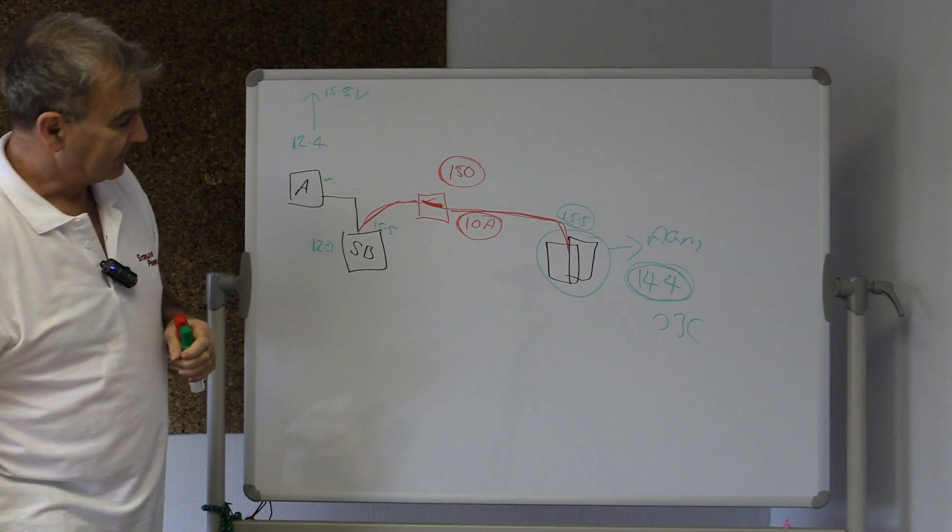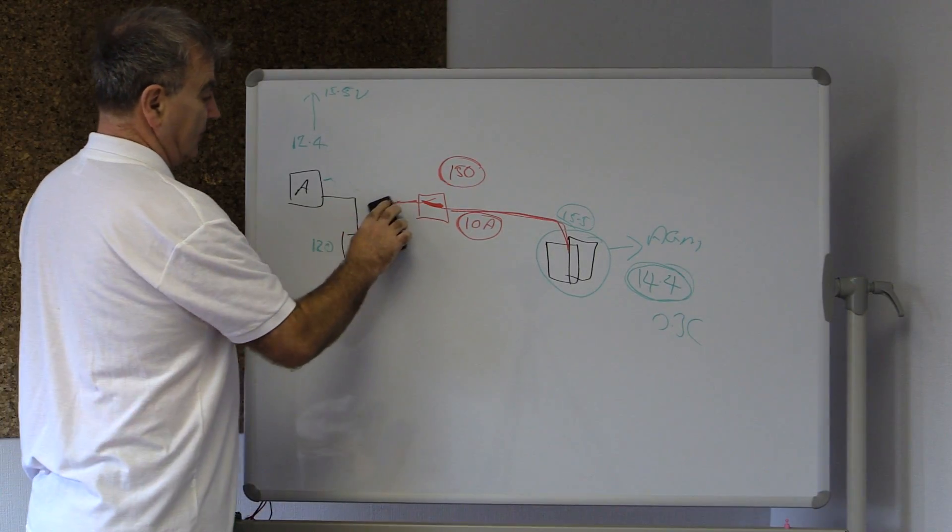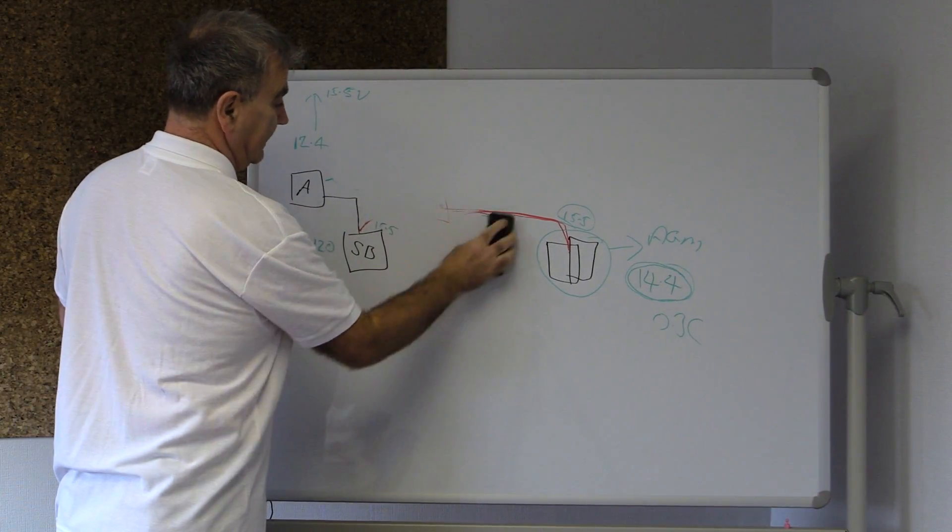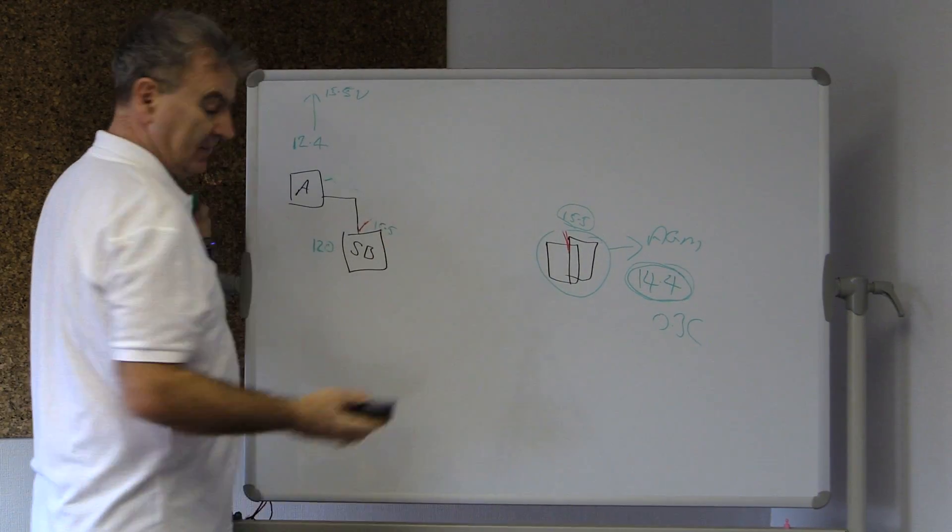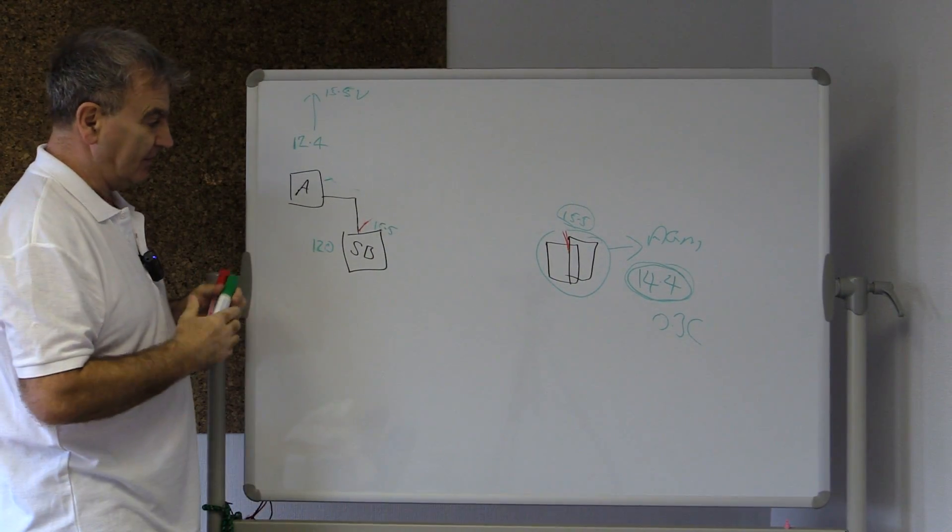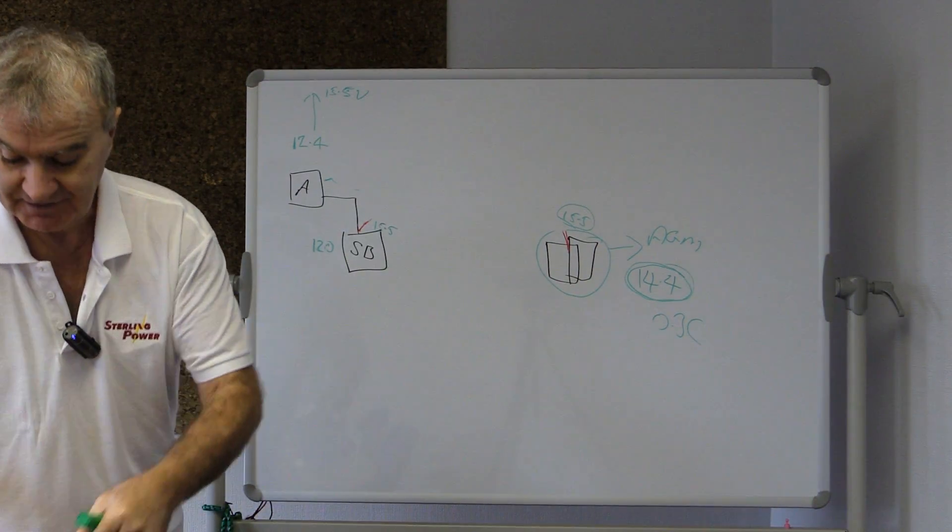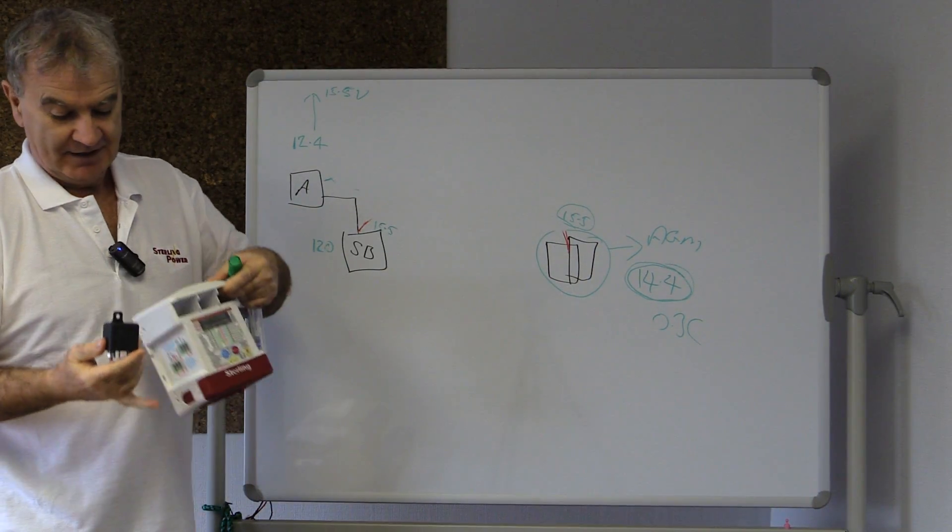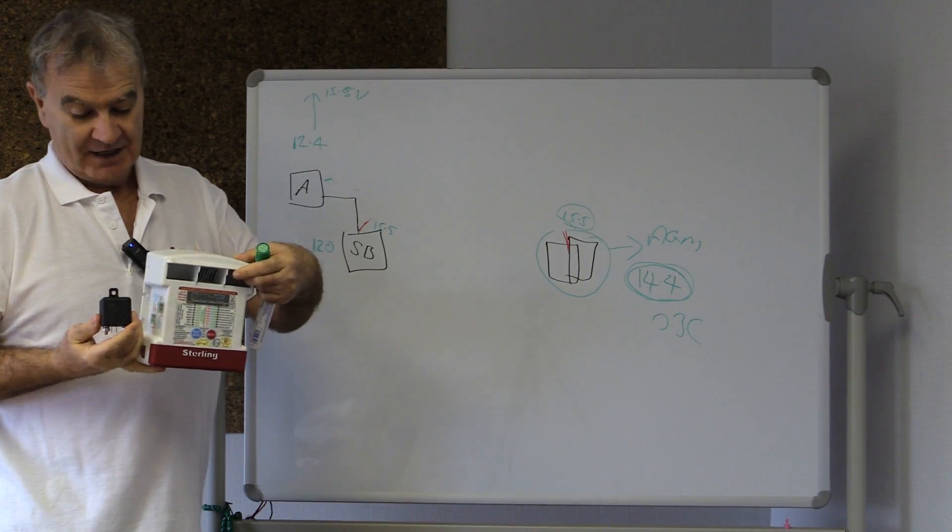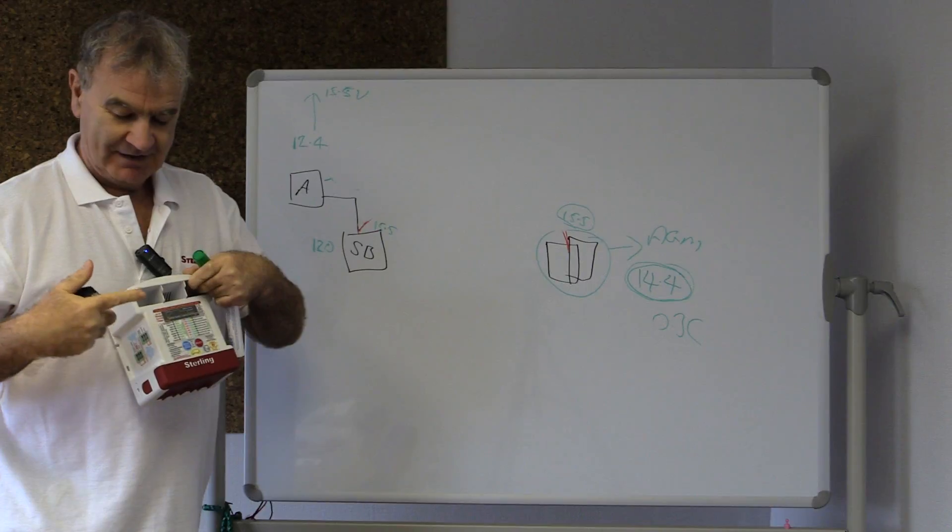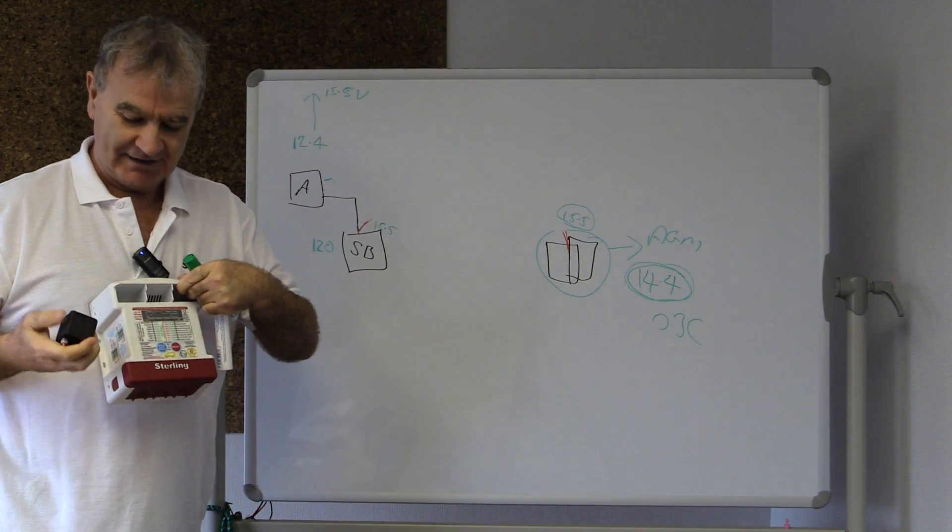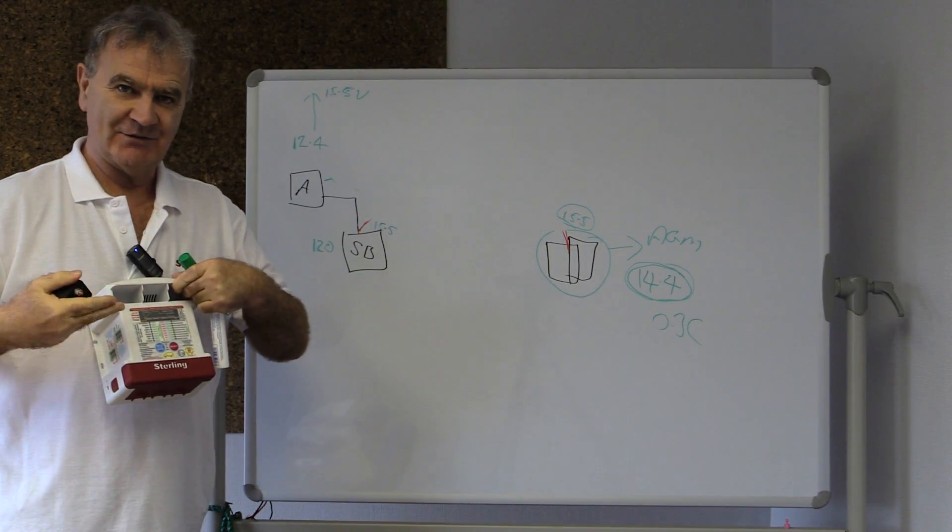So if we were to replace all that with, instead of a relay, which is what some people are doing - most of the builders now are using a thing called the battery-to-battery charger. This is your split charge relay, and this is a battery-to-battery charger. There is a difference. This is 100 years old, this is two years old. And yet look at the size difference. So this is obviously doing something that this isn't.